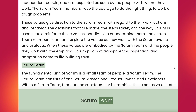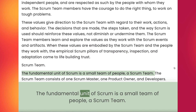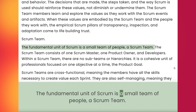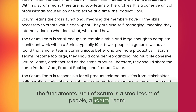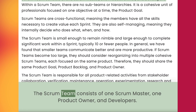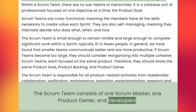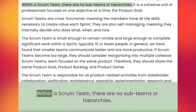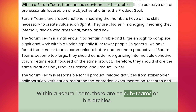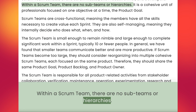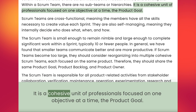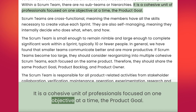Scrum Team. The fundamental unit of Scrum is a small team of people, a Scrum team. The Scrum team consists of one Scrum Master, one product owner, and developers. Within a Scrum team, there are no sub-teams or hierarchies. It is a cohesive unit of professionals focused on one objective at a time, the product goal.